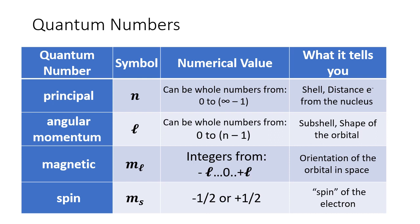The principal quantum number uses the symbol lowercase n. Its values can be whole numbers from 1 up to infinity, such as 1, 2, 3, and so on. The principal quantum number tells us the shell number — the shell concept comes from early notation where atoms were thought to be layered around the nucleus like onions. It also tells us the distance the electron lives from the nucleus: the higher the principal quantum number, the farther the electron is from the nucleus and the higher in energy it is.